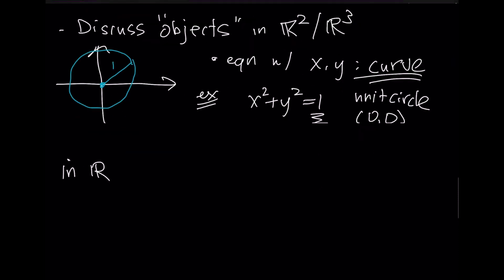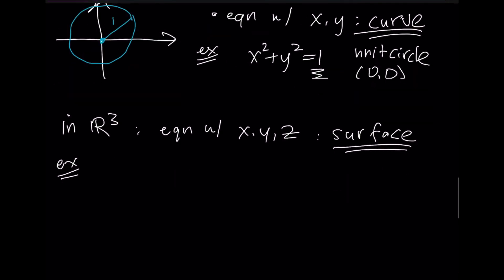If we are in R3, any equation that has x, y, and z, we're now going to call this a surface. Here's an example of a surface. So let's say z equals 1. So this is the set of all points in R3 that has z equals 1. So another way to think of it is this is the set of all points that's going to have coordinates with x and y and 1.